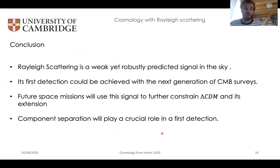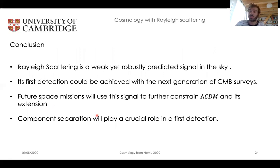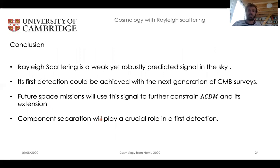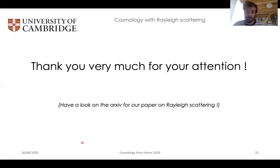To conclude: Rayleigh scattering is a weak yet robustly predicted signal in the sky. Its first detection should be achieved by the next generation of CMB surveys, and future space missions will be able to use this signal to put tighter constraints on ΛCDM and its extensions — namely the sum of the neutrino masses and the number of relativistic species Neff. However, foregrounds will need to be carefully dealt with, and component separation will play a crucial role in a first detection. Thank you very much for your attention — I look forward to answering your questions at the live discussion session.